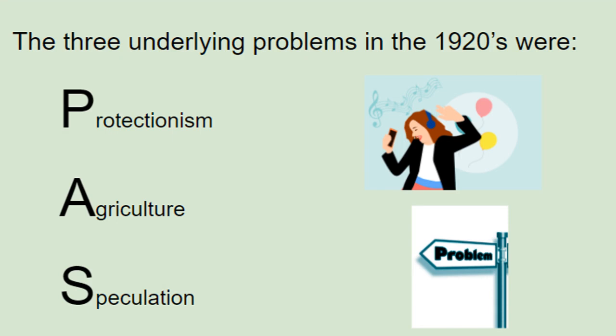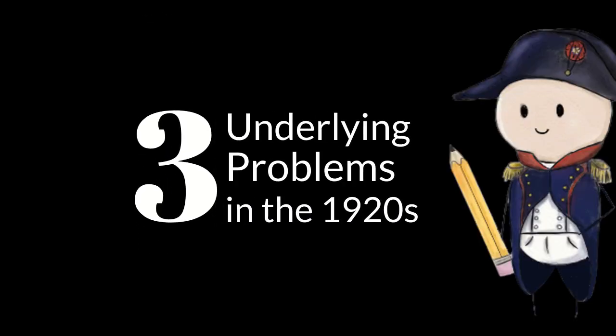Remember, the three underlying problems in the 1920s were protectionism, agriculture, and speculation. All would eventually lead to the end of the prosperity in the 1920s and the beginning of the Great Depression in the 1930s. Thanks for watching — I hope this helps.